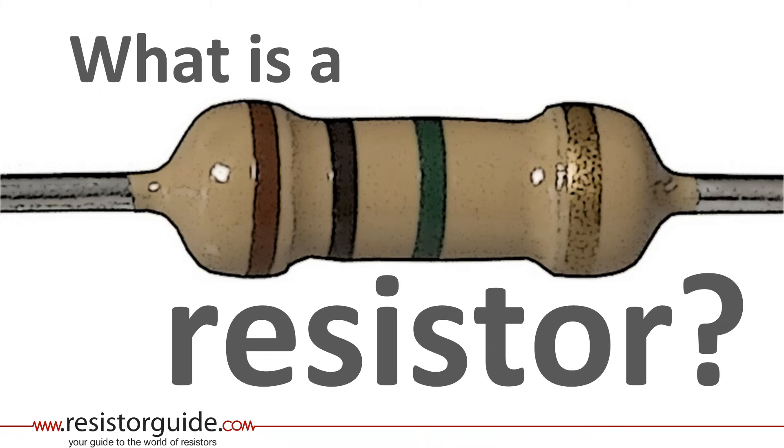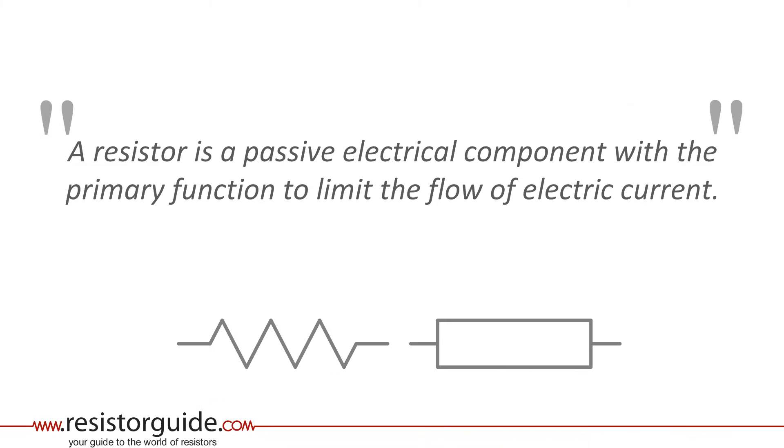What is a resistor? A good definition might be this one. A resistor is a passive electrical component with a primary function to limit the flow of electric current.